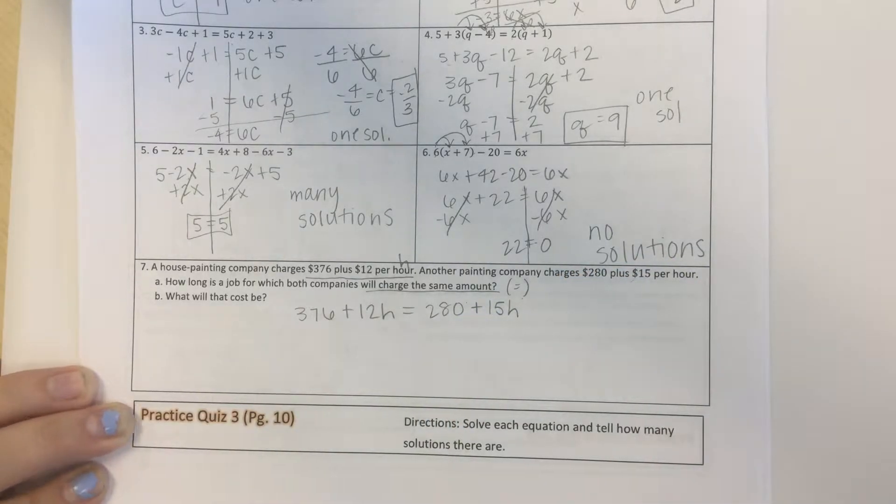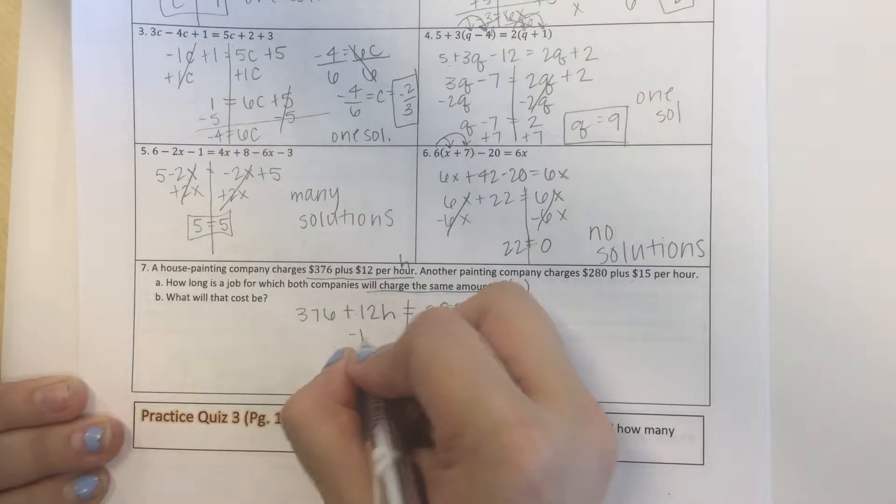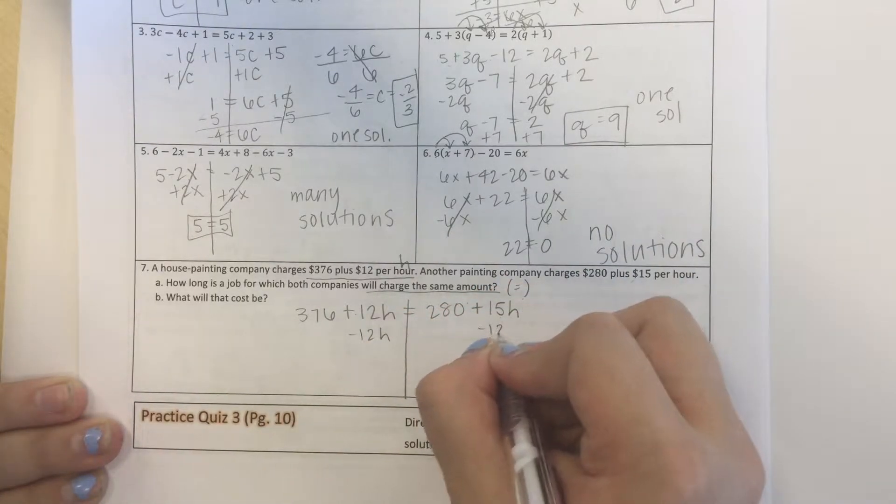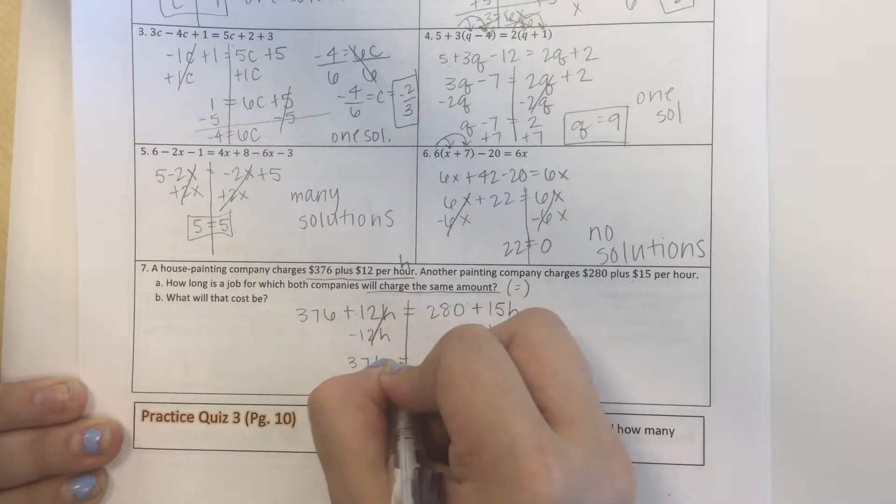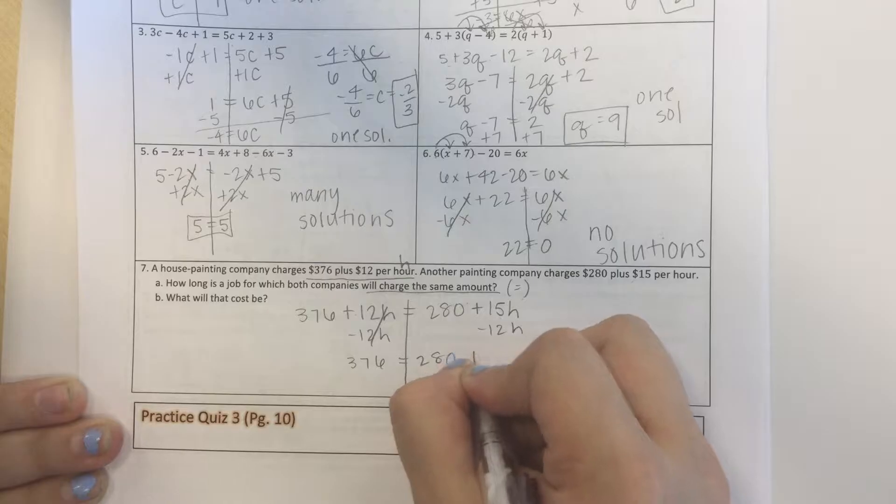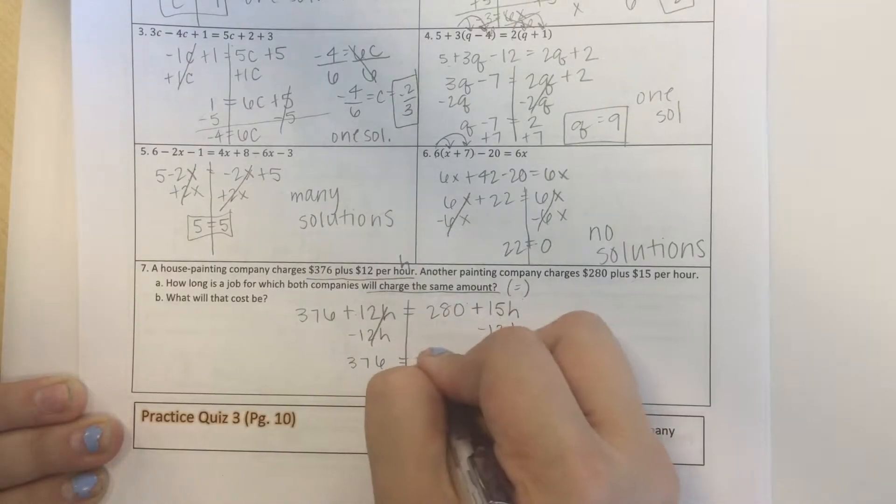Now we just have an equation we need to solve. So $15 is bigger than $12, so I'm going to subtract $12 from both sides. So $376 equals $280 plus $3h minus $280.